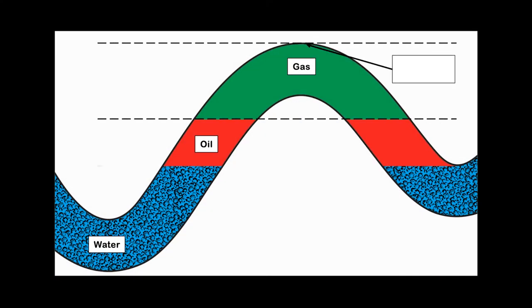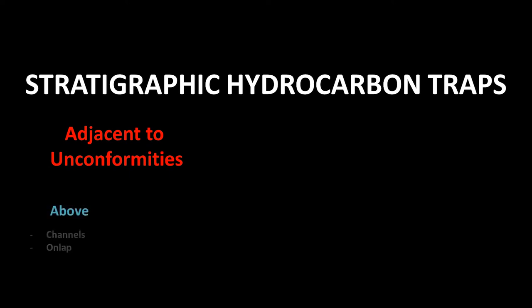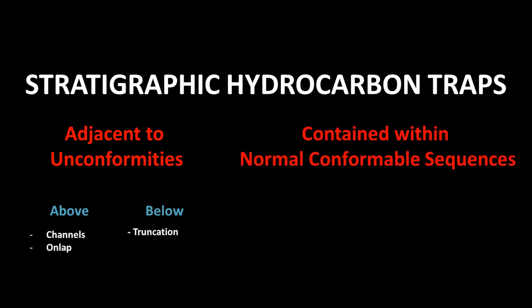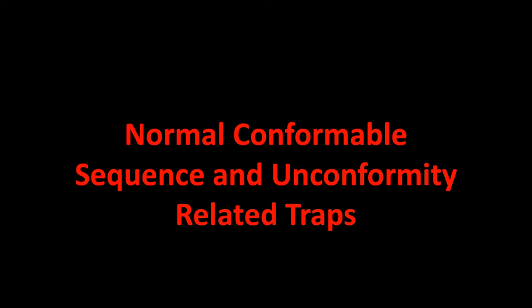To start, we look at a basic cross-section of an anticlinal trap. You should be able to identify all features within this cross-section. Let's begin our look at stratigraphic hydrocarbon traps. These traps can be found adjacent to unconformities, above in the form of channels or on-lap, or below where truncation occurs. Stratigraphic traps can also be contained within normal conformable sequences, which can be depositional in nature, in the form of channels, bars, and reefs, as well as diagenetic traps, where traps occur due to secondary porosity from fracturing and replacement. We will have a look at the development of a simple normal conformable sequence and unconformity-related traps.